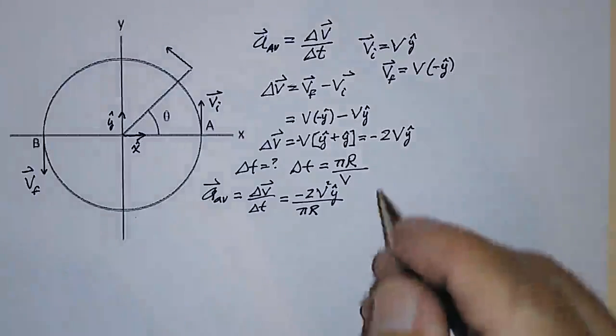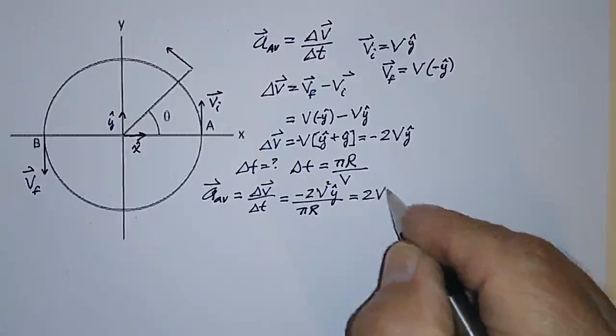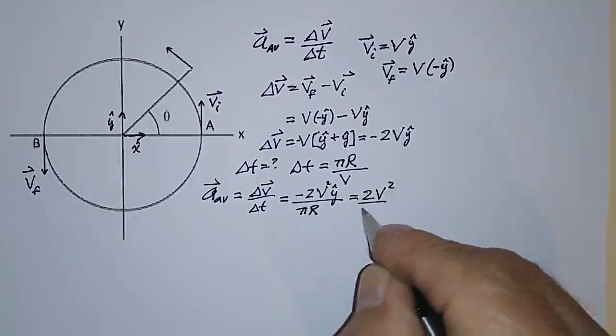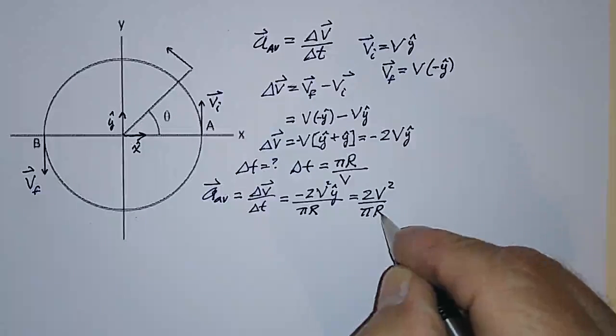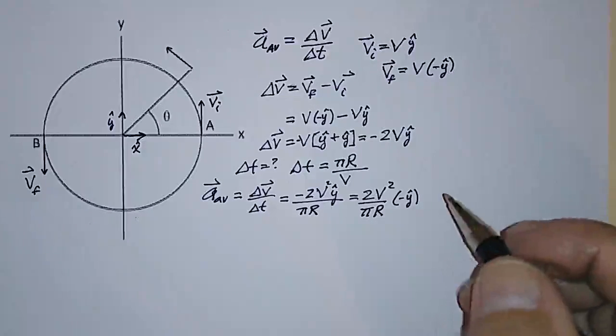and that puts a square up here. So this is equal to 2V squared over pi times R, in the minus Y direction.